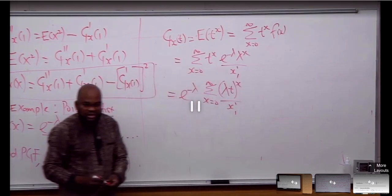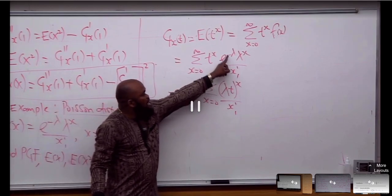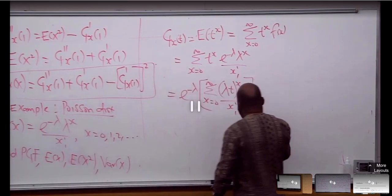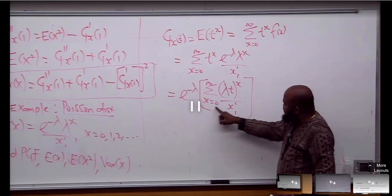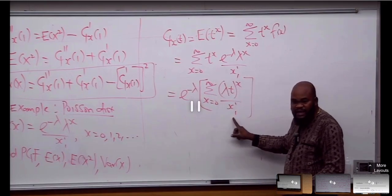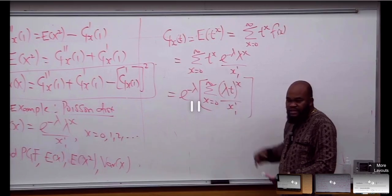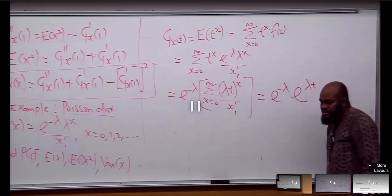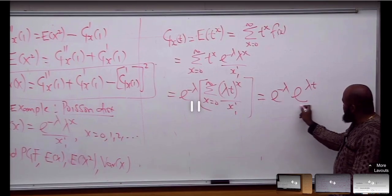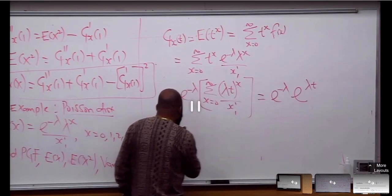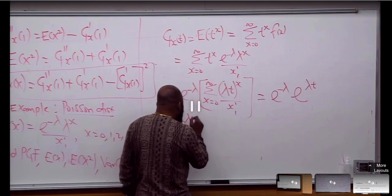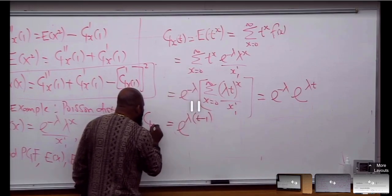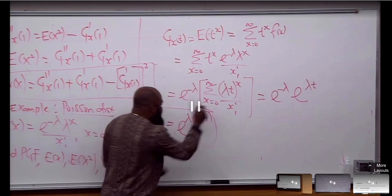I'm seeing something here. The sum from s equals zero to infinity of (λt)^s over s factorial — that is the exponential series, e raised to the power (λt). So this can be written as e^(-λ) times e^(λt), which combines to give e^(λ(t-1)). That is the probability generating function for the Poisson distribution.